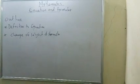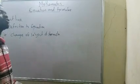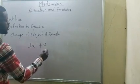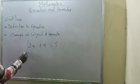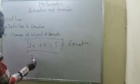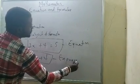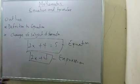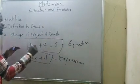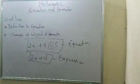Let me define equation. Equation is when you have an expression attached with an equality sign. Like 2x plus 4 equals to 5 — this is a very good equation. But if I have x plus 4 with no equality sign, this is an expression. Expression means there is no attachment of an equality sign. But in an equation, there must be an equal-to sign.